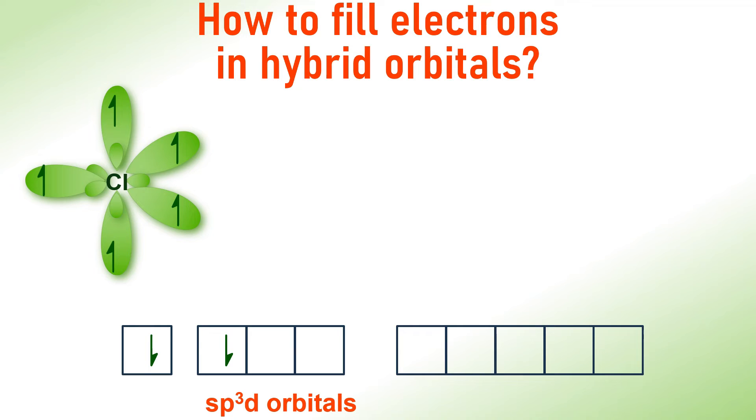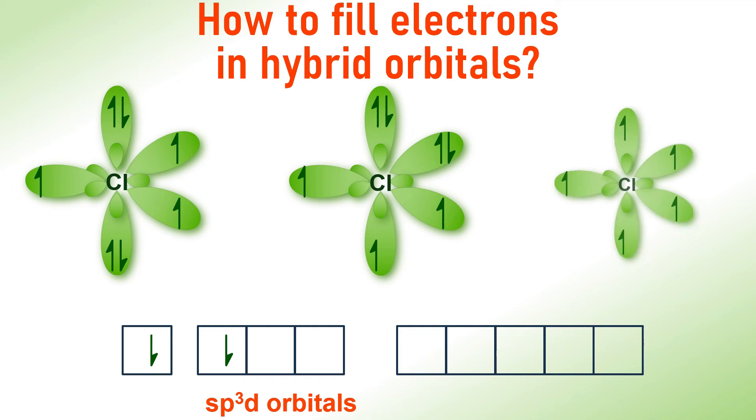These three possible pairing scenarios involve either both electrons entering the axial orbitals, or one electron going into an axial orbital while the other enters an equatorial one, or both electrons occupying the two equatorial orbitals.